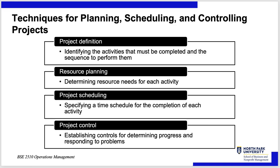Here are some techniques. Project definition means identifying the activities that must be completed. This assumes the project charter we talked about last time is done. Some books never talk about charters; some spend a lot of time on them. A charter tells you up front what you're going to do — and more importantly, what you're not going to do — the measurements of success, and how much money and time is initially allocated. We'll look at project definition assuming a charter is done.